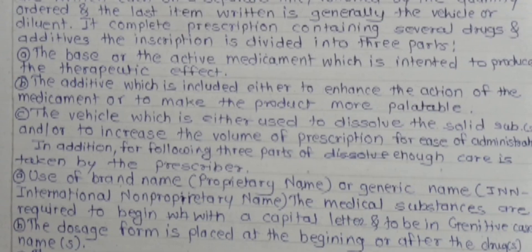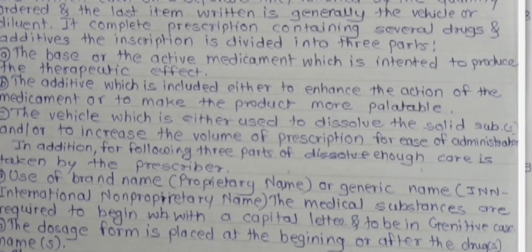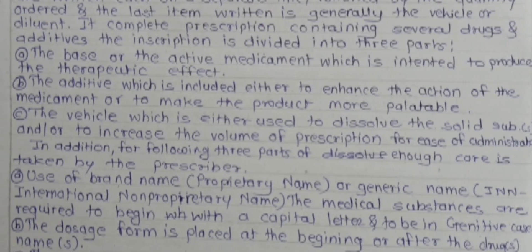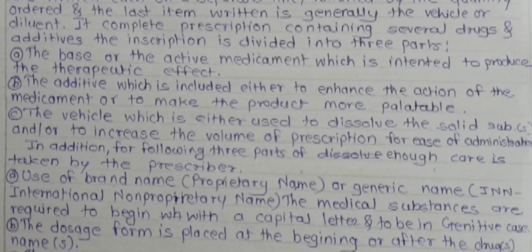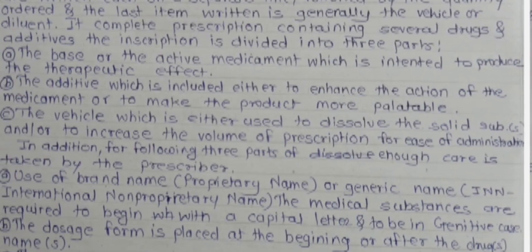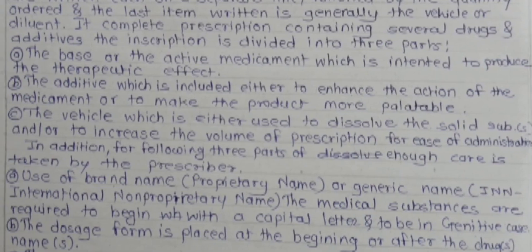Further significance of inscription: use of brand name or generic name; medicinal substances are required to begin with a capital letter; the dosage form — such as injection, capsule, or tablet — is placed at the beginning or after the name of the drug; the dose is written after the medicinal product name; and strength is given in the metric system, such as 500mg.